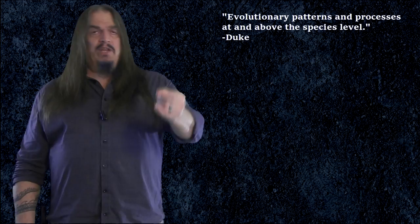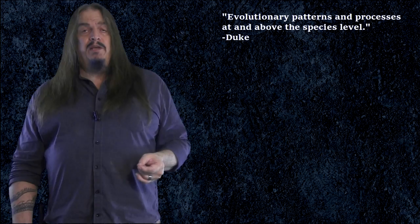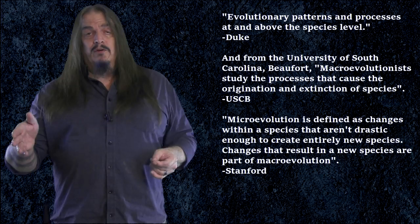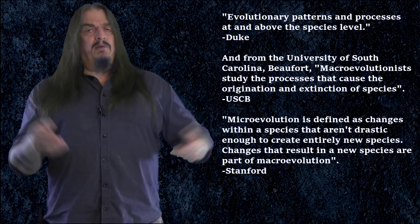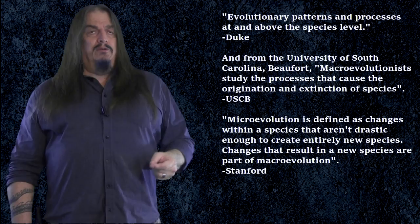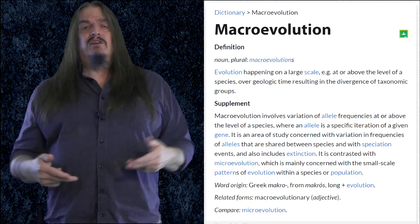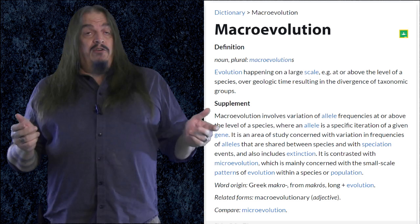We get the same definition from Duke University. Evolutionary patterns and processes at and above the level of species. And from the University of South Carolina, Beaufort, macroevolutionists study the processes that cause the origination and extinction of species. And from Stanford University, microevolution is defined as changes within a species that aren't drastic enough to create entirely new species. Changes that result in a new species are part of macroevolution. Now, let's look at the reference library biology online. Evolution happening at a large scale, e.g. at or above the level of species over geologic time resulting in the divergence of taxonomic groups. Every such divergence begins with speciation.